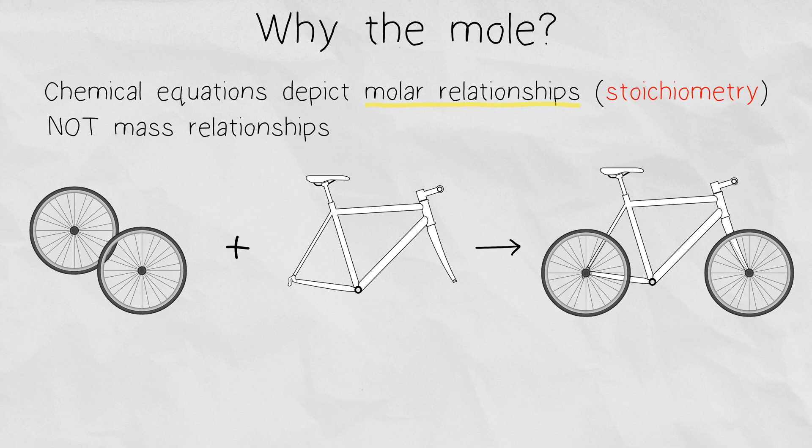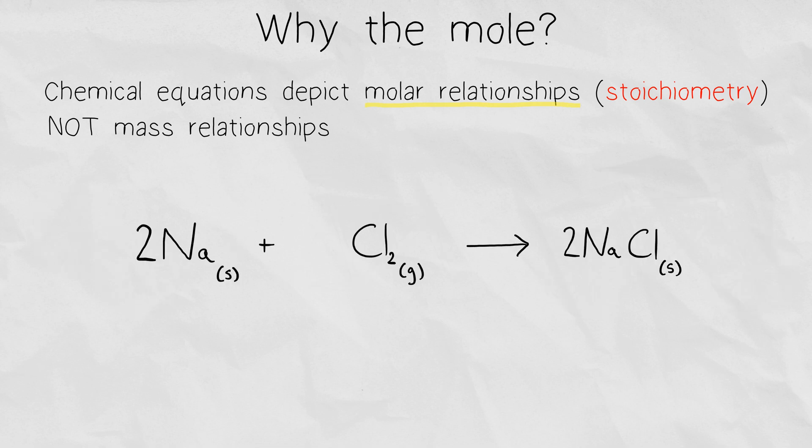So if we switched out the bicycle example and instead wrote the balanced chemical equation, 2 sodium plus 1 chlorine gas gives us 2 sodium chloride, we're actually implying that it requires 2 moles of sodium metal plus 1 mole of chlorine gas to make 2 moles of table salt. So the stoichiometry for these substances is 2 sodium for 1 chlorine gas for 2 sodium chloride. That's the molar ratio of substances we need to complete this reaction, just like how we built the bike.